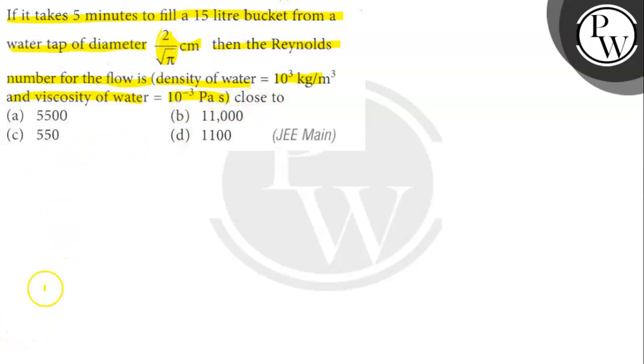So here you have to find the Reynolds number for the flow. The density of water is 10³, density of water is given, viscosity of water is given.